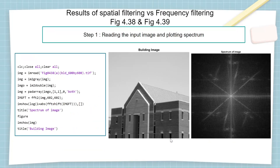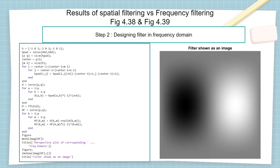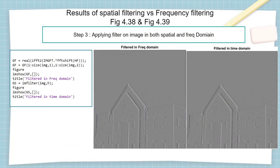In the MATLAB implementation, in step 1 we read the image into the MATLAB workspace as a 2D array and convert it to a double array. We visualize the spectrum by applying a log transform as previously mentioned. Then we declare the desired Sobel filter in the spatial domain, apply the padding, and perform the steps described to obtain its frequency domain response. The perspective plot and image of the filter in the frequency domain are shown. We then apply the filtering operation over the image in both spatial and frequency domain.